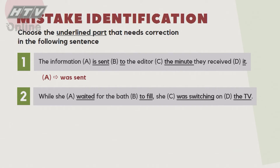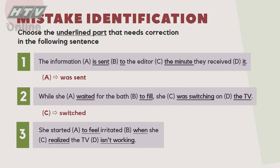Câu số 2: 'While she waited for the bath to fill, she was switching on the TV.' Đáp án là C - phải là 'she switched on the TV.' Câu số 3: 'She started to feel irritated when she realized the TV isn't working.' 'Started' và 'realized' đều là quá khứ, nên chữ D không thể là hiện tại tiếp diễn - phải là 'wasn't working.'